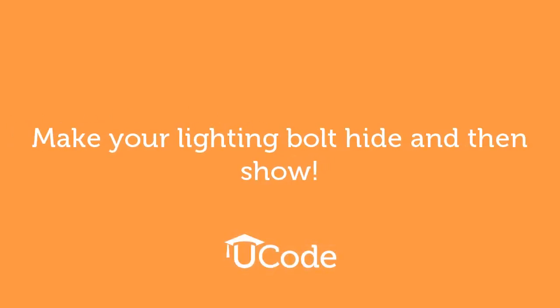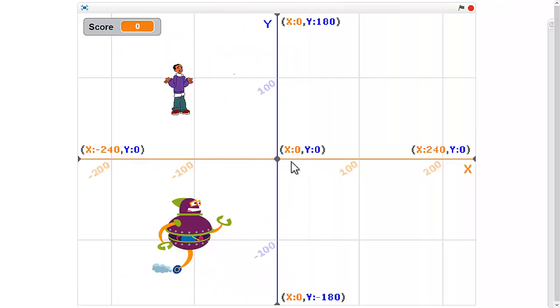Make your lightning bolt hide and then show. So when we first start the game we want our player to be able to read the directions and get used to the game first, and then we want the lightning bolt to just pop out.